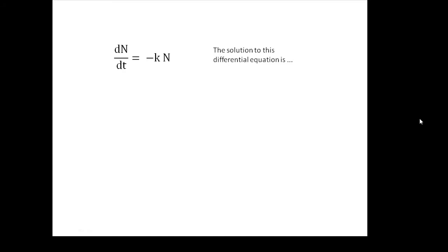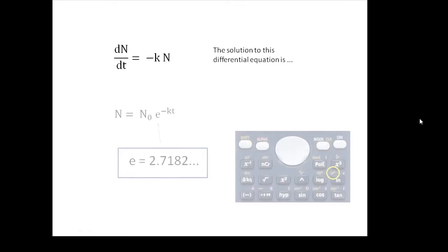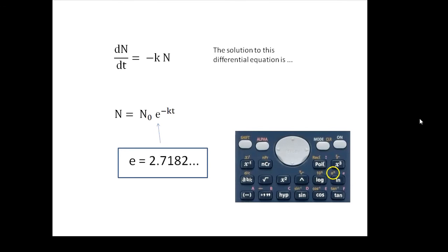Now, this is something that we call a differential equation. I don't know how much calculus you've done, but this is a differential equation, and it has a solution. The solution to this equation, if we do a bit of integrating, the solution is n equals n naught e to the minus kt. And with this equation, we can work out n at any value of t.